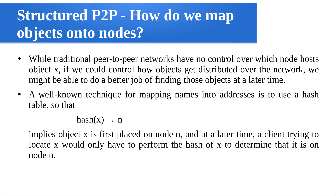A well-known technique for mapping names into addresses — here, object name into node address, that is the machine address of the node which is hosting that object — one of the well-known techniques is to use a hash table. Just like hash(X) gives you a value N, which implies object X is first placed on node N. Depending on the value given by the hashing function, you are going to place the object. And at a later time, a client trying to locate X would only have to perform hash(X) to determine that it is on node N.